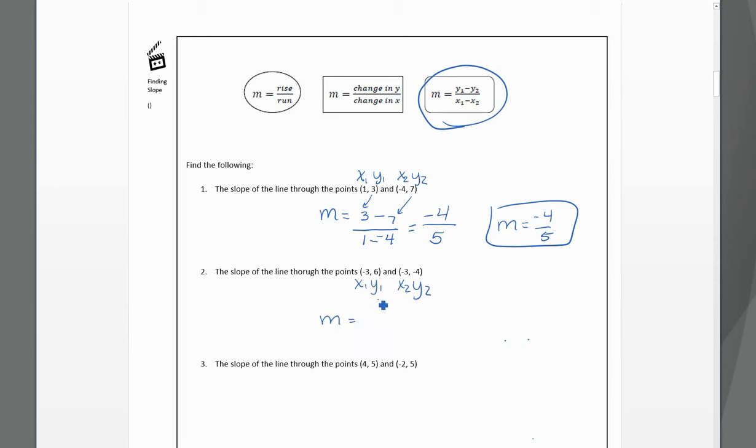So our slope will be y1, 6, minus y2, negative 4, over x1, negative 3, minus x2, negative 3. So 6 minus a negative 4, that becomes a positive 10. And here, negative 3 minus a negative 3, well, that becomes 0. And here, we have a big, big problem.